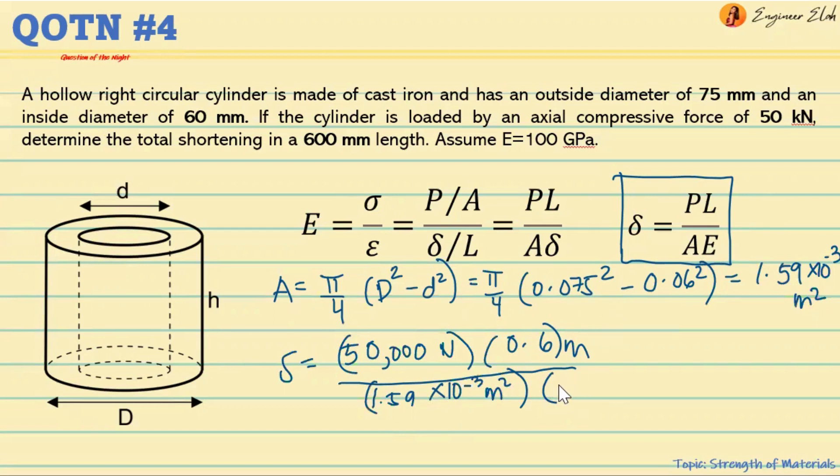And the E is 100 gigapascals, but if we convert that to pascals, that will be 100 times 10 raised to 9 pascals. We know that pascals is in newtons per square meter, so we can cancel these units and plug this into the calculator.